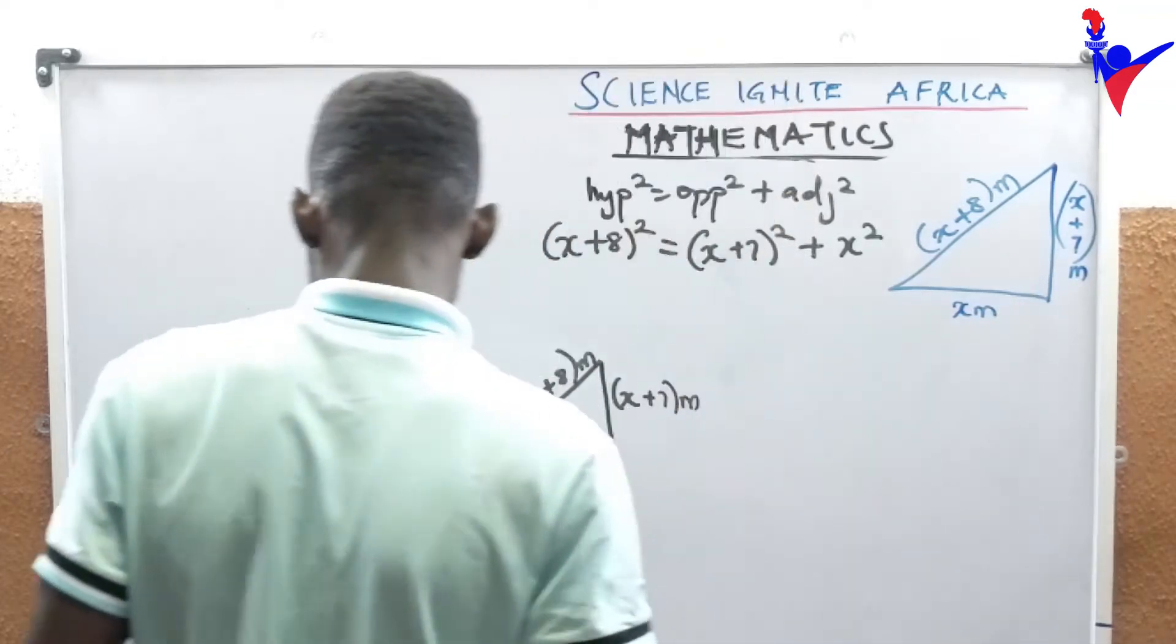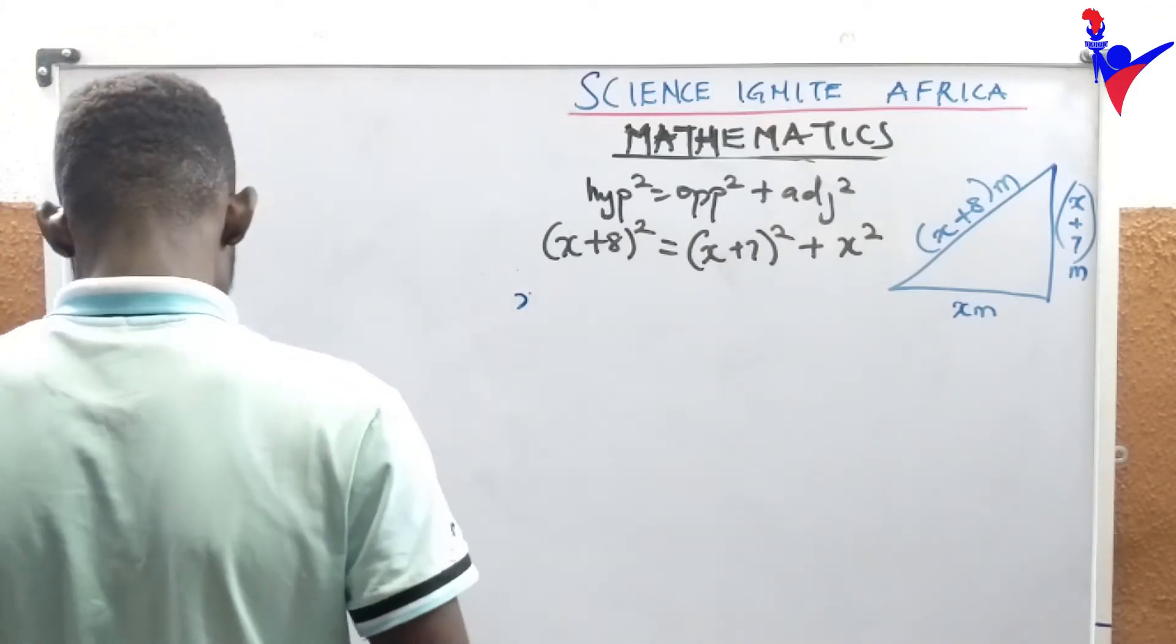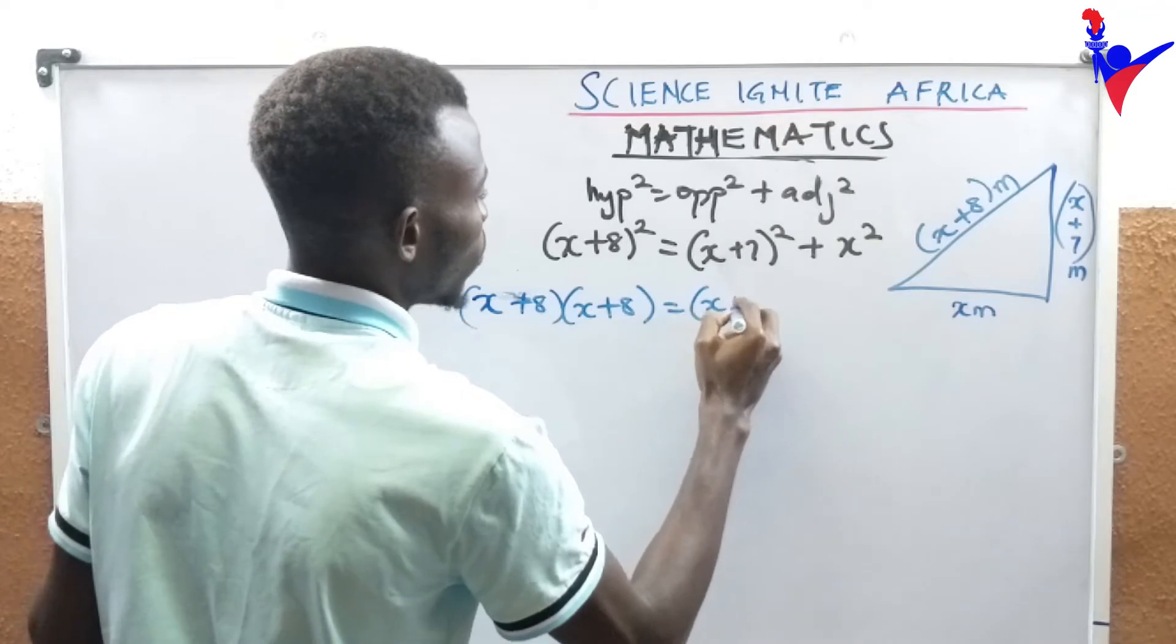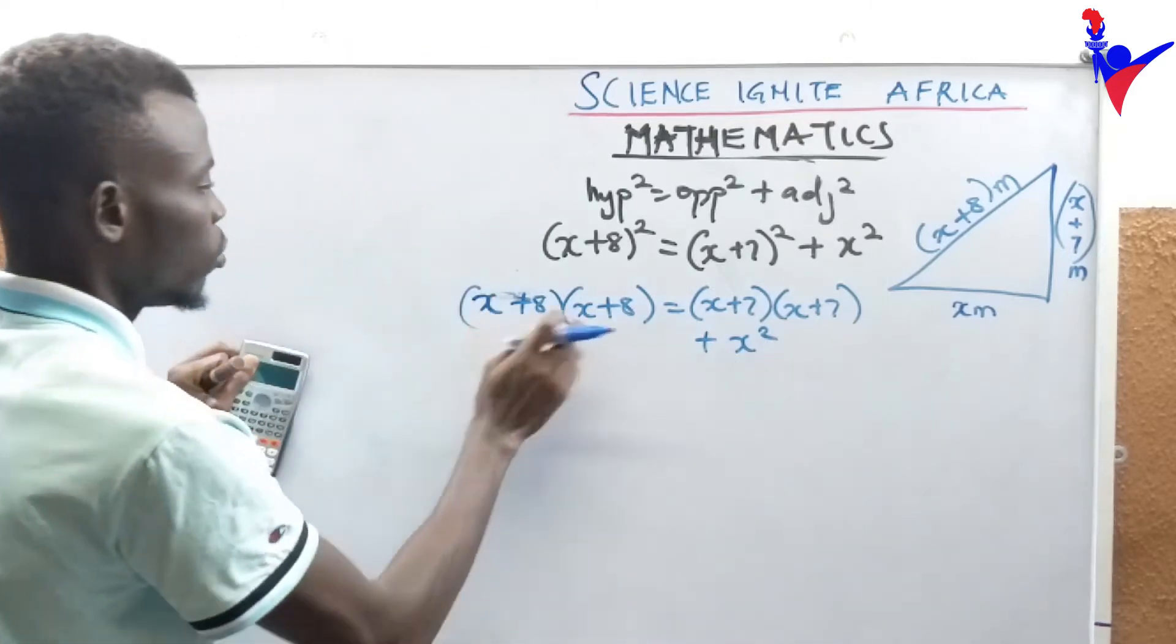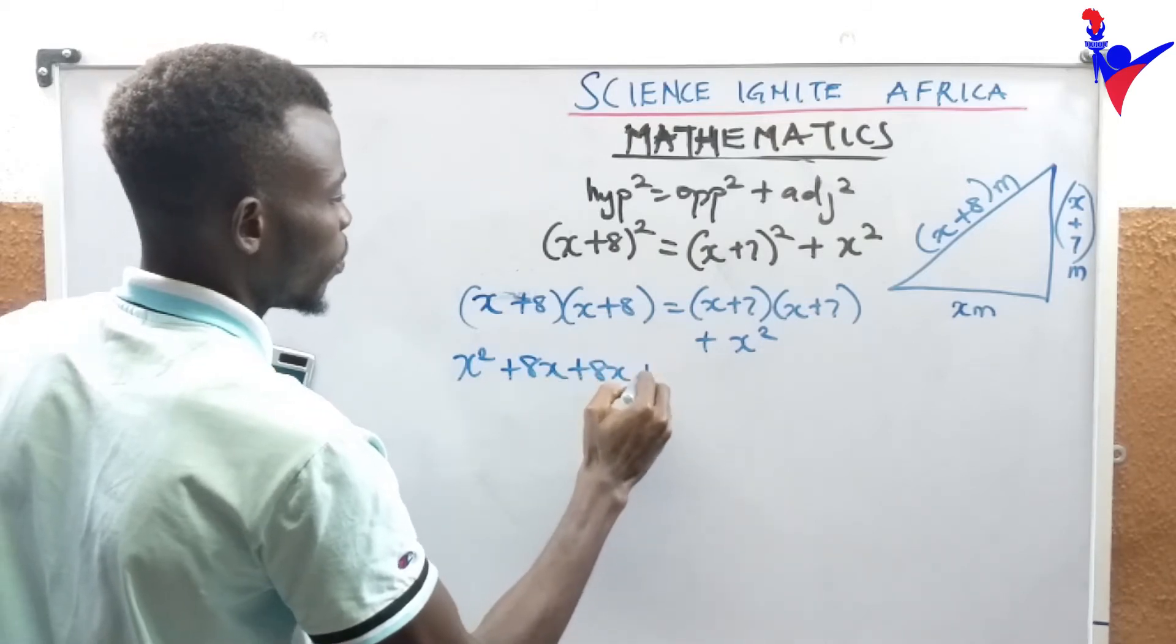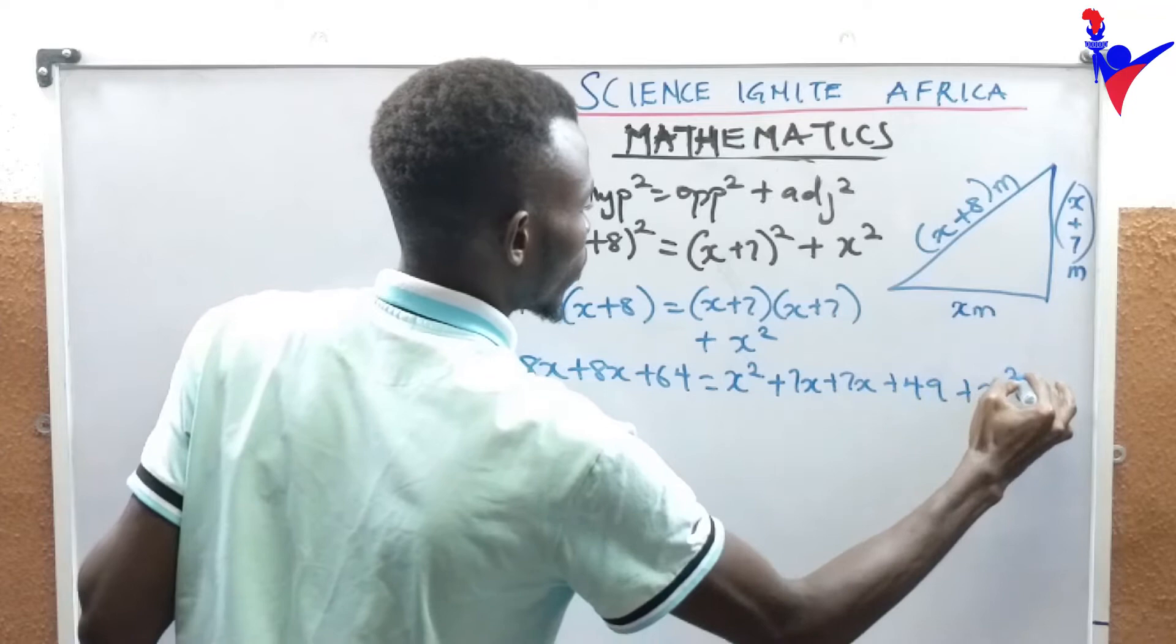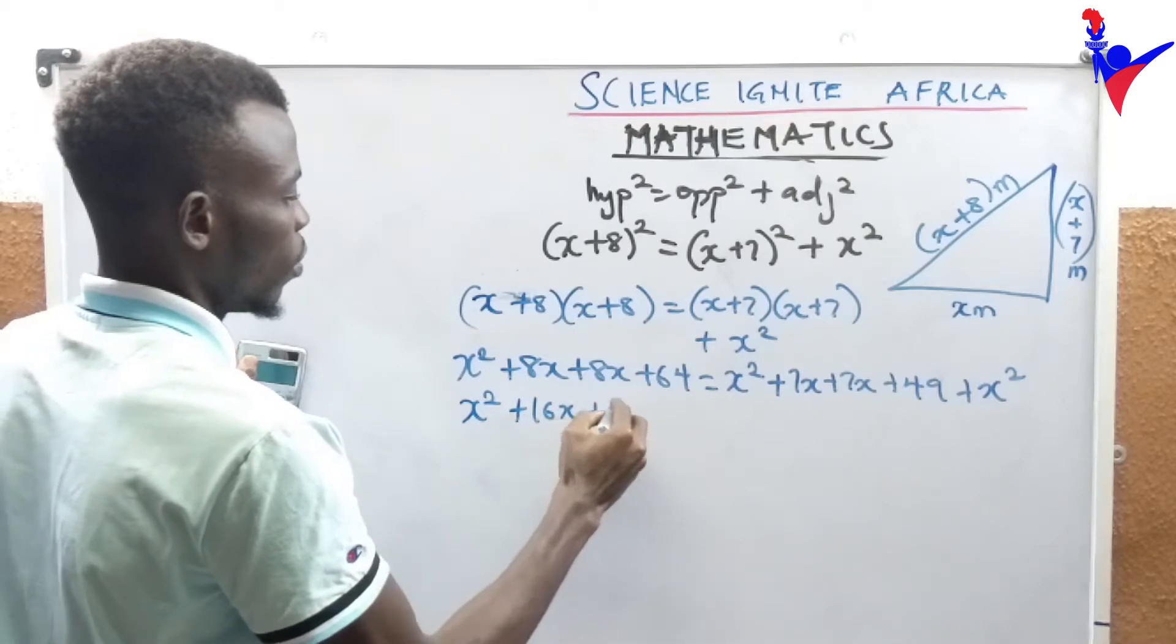Let me redraw this. Here is x plus 8, here is x meters, and here is x plus 7, all in meters. I have to expand this: x plus 8 times x plus 8 equals x plus 7 times x plus 7 plus x squared. This will be x squared plus 8x plus 8x plus 64.